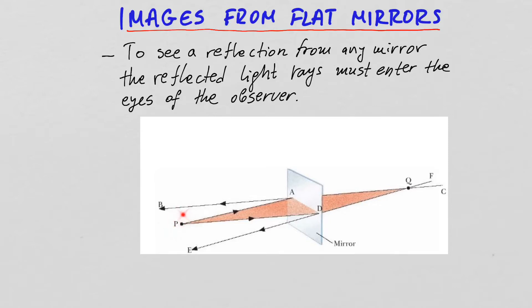So we have an object located at point P here in front of a flat mirror. And so let's say that we have two light rays that start from the object, one that ends at point D on the mirror, and the other one that ends at point A on the mirror. So upon reflection, the first ray starts from P and upon reflection, reflects from D and goes towards point E.